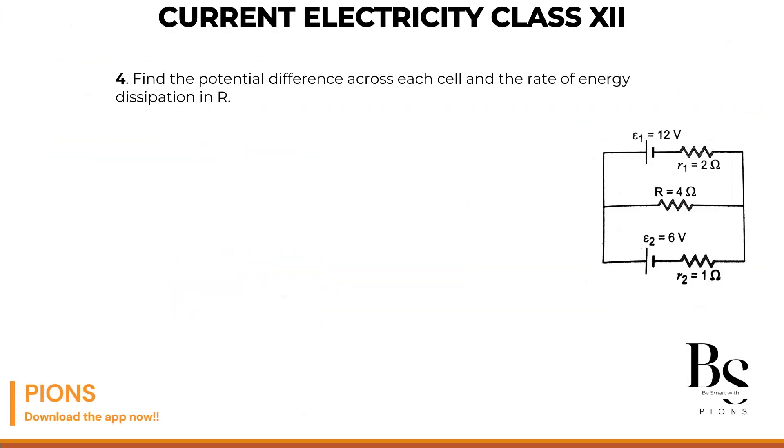Find the potential difference across each cell and the rate of energy dissipation in R. So potential difference means your terminal voltage they are asking, assuming this 6 volt is the EMF and R2 and R1. Basically what will be the terminal voltage across R, that's what they're asking, right.